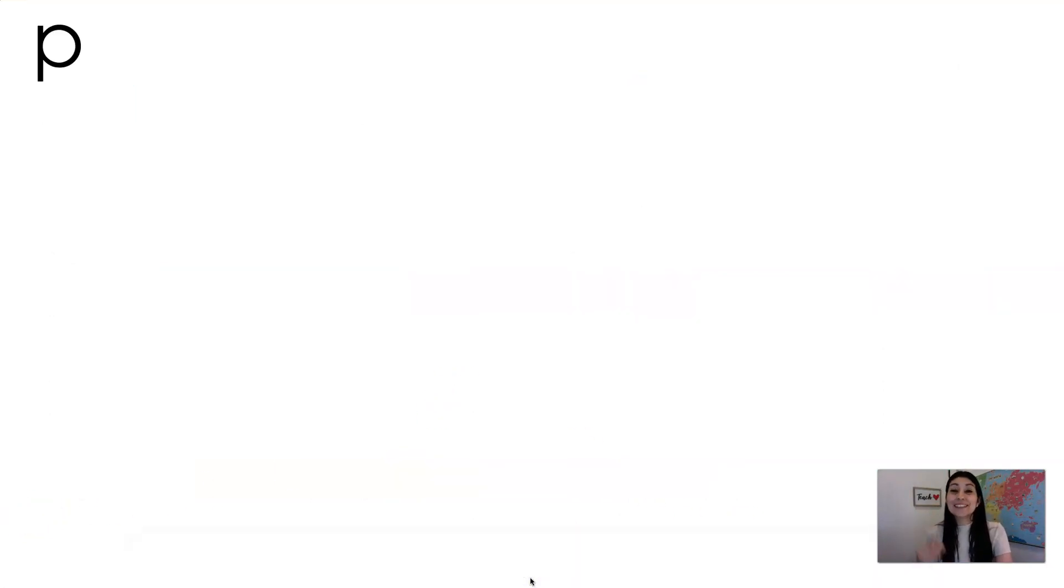Now we're going to practice reading some words and then adding the sss sound at the end. Adding an s. Watch me do this one. Pat. Pat sss. Ready? You do it. Don't say the sounds out loud. Word. Tap. Now. Word. Taps. Good job. Next one.